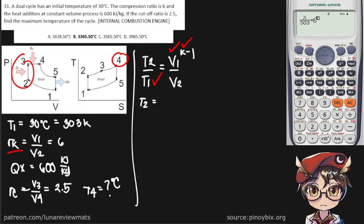That's our R sub K. Okay, so we get a T2 of 620.44 Kelvin.